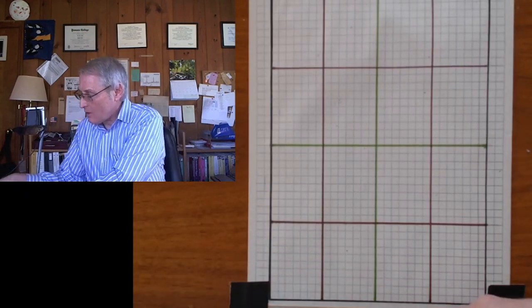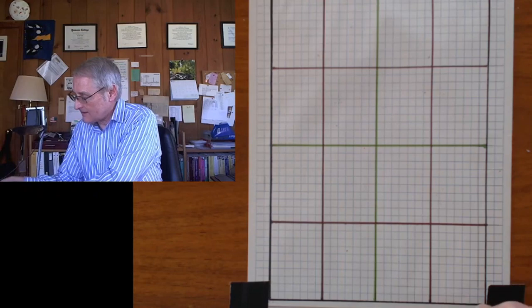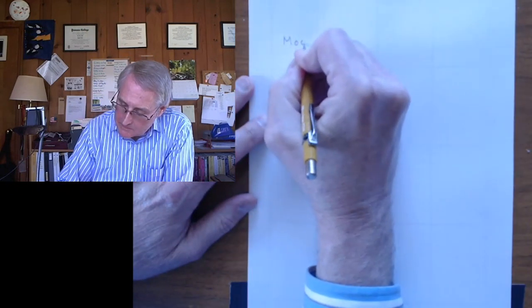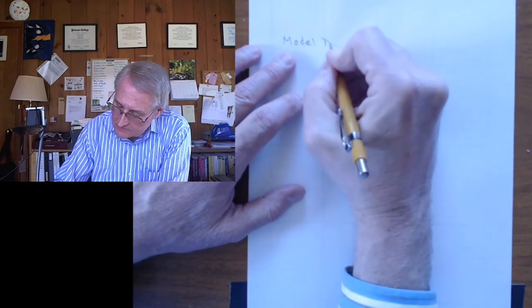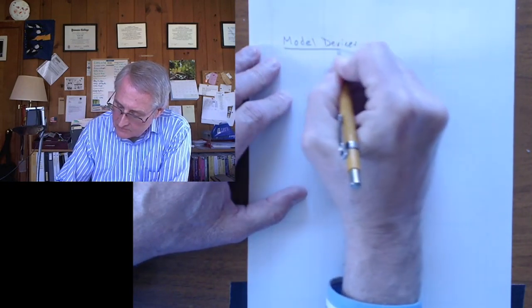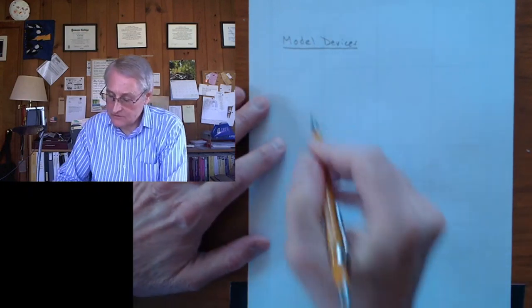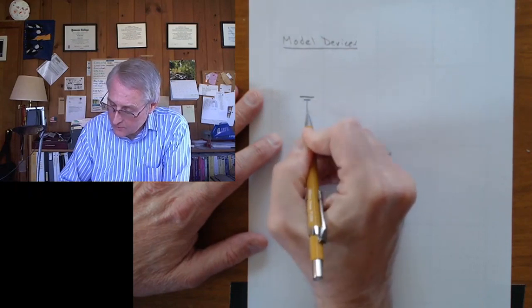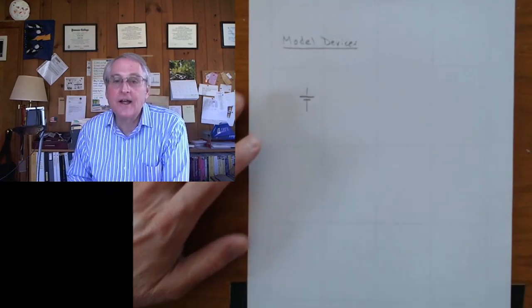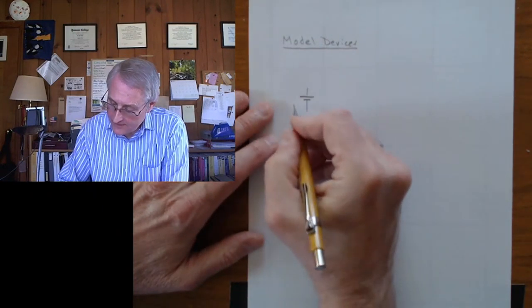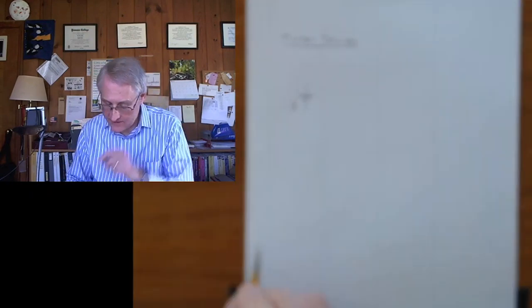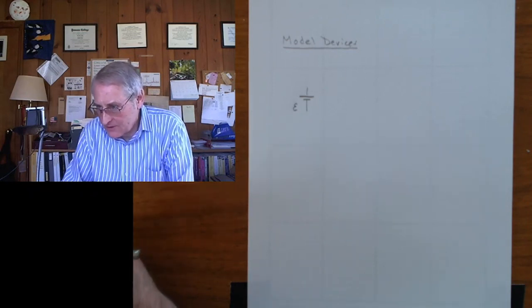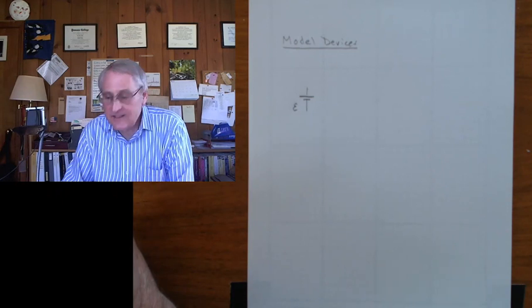Next topic. The whole lab is about model devices. So let's say something about model devices. First of all, we have a cell, a battery, but a single-cell battery. Here's the symbol. You know it already. That's an idealization. It's a perfect source of EMF, of voltage. And normally, we're happy with that. But a real-world battery, or a cell in a battery, actually has some limits.